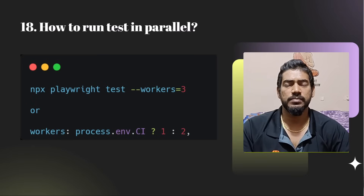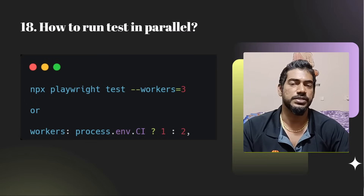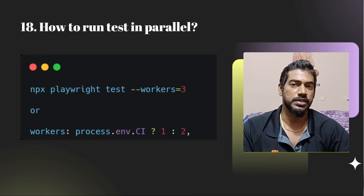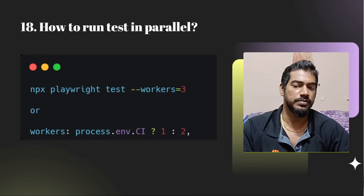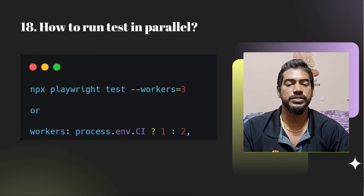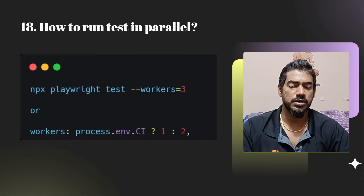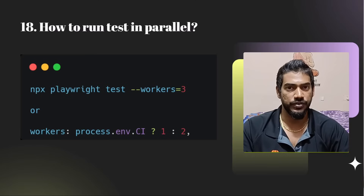How to run tests in parallel? By default, Playwright executes tests in parallel out of the box. But if you want to control it — for example, if you have 10 test cases and want to run 3 browsers at a time — you can use the command line argument --workers, or configure it in your Playwright config file.